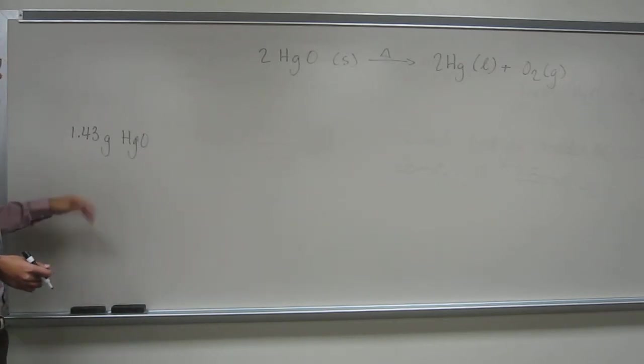So our problem says we've got 1.43 grams of mercury two oxide. What is the total mass of oxygen that we'll make if the reaction goes to completion?